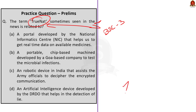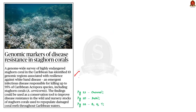Look at this Science page article. A survey of staghorn coral in the Caribbean has concluded how genetics provided it immunity against the white band disease. The findings are significant because it could be used to improve disease resistance in other regions as well. In this context, let us quickly go through some points about staghorn coral and white band disease.